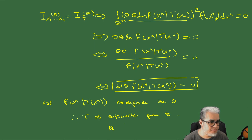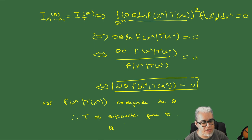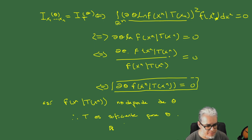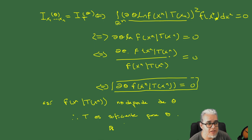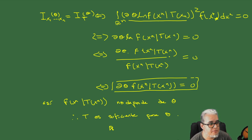Bueno, hoy la vamos a dejar aquí. La próxima sesión vemos un ejemplo usando este resultado y veremos qué pasa con las distribuciones conjuntas cuando son suficientes para un vector de estadísticas. Nos vemos en la siguiente sesión.